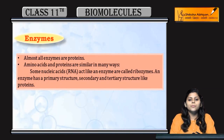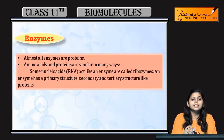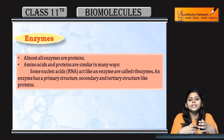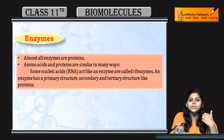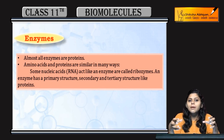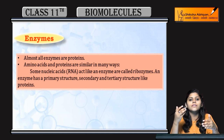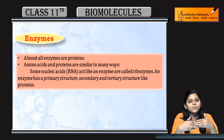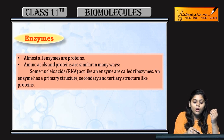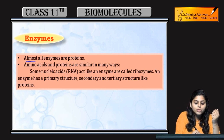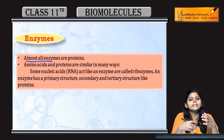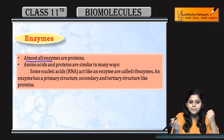Next topic is enzymes. Enzymes kya hote hai? Kis ke bane hoote hai enzymes? Enzymes amino acids ke bane hoote hai. Jaise proteins amino acids ke bane hoote hai, waise hi enzymes bhi amino acids ke bane hoote hai. Almost all enzymes are proteins.